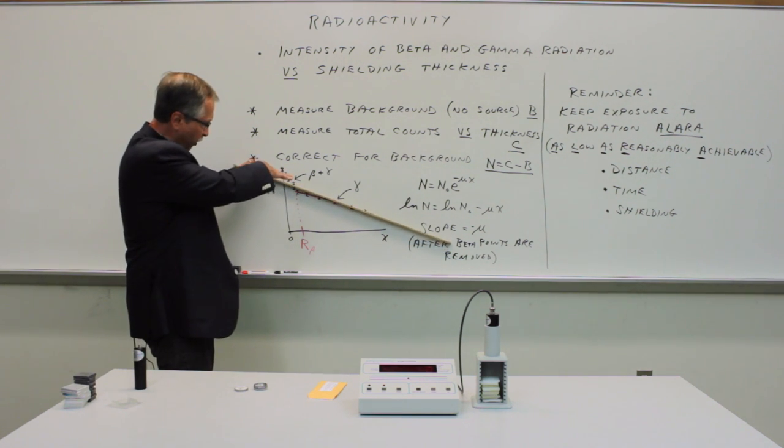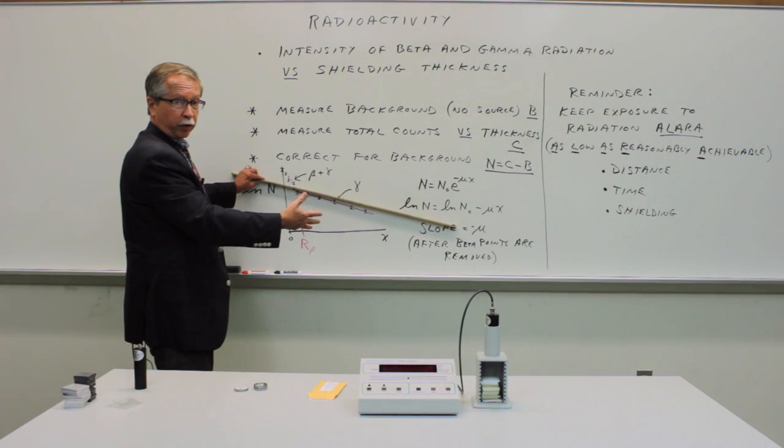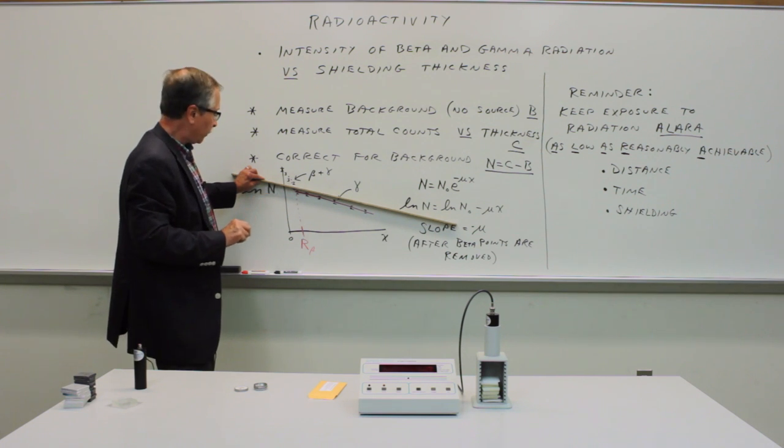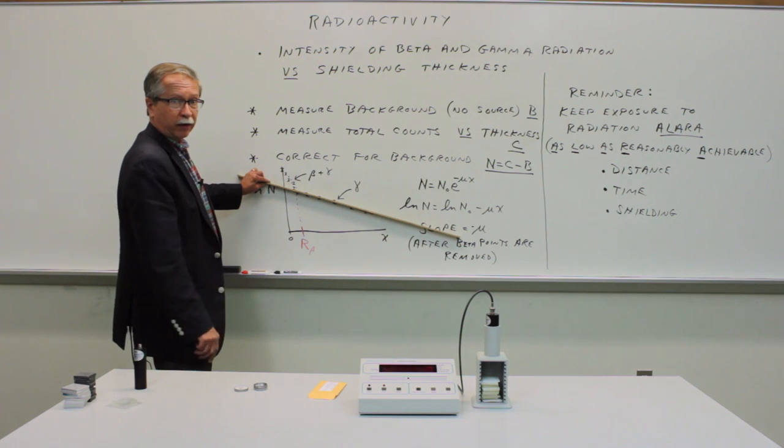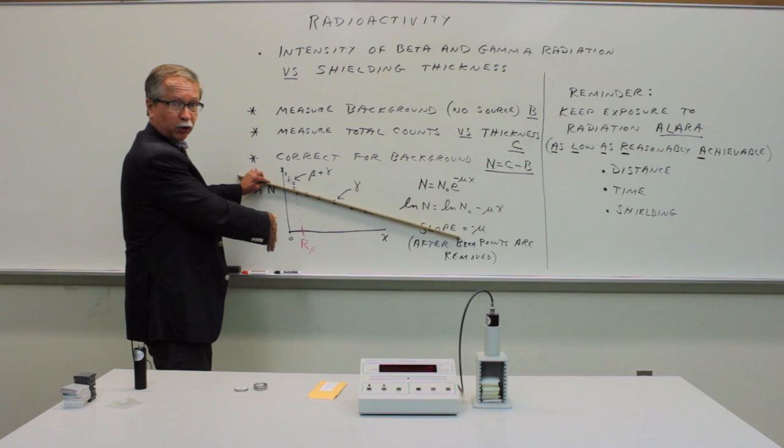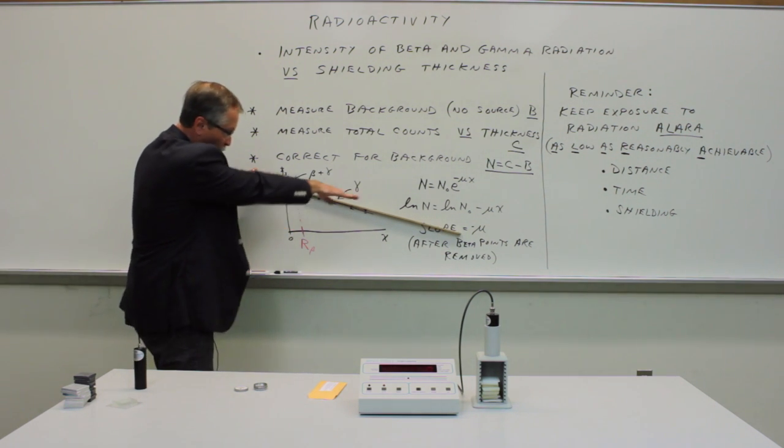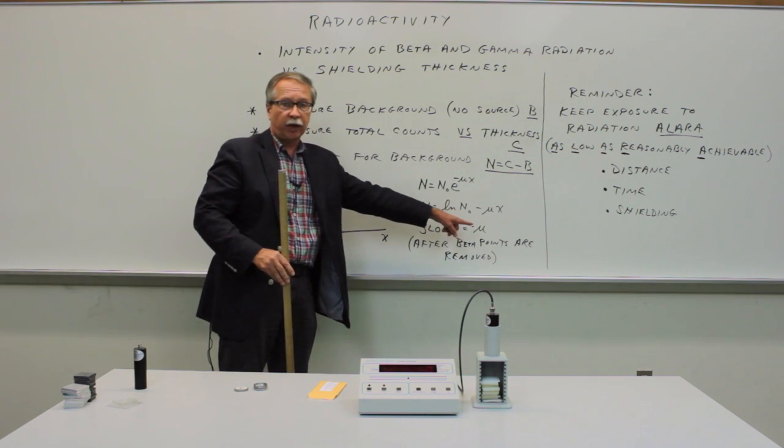That will gradually change the slope of this line and it will improve the value of chi-squared. You want to get a reduced chi-squared that's as close to one as possible. So when you are satisfied that you've optimized the value of chi-squared, the last data point that you chopped out of the set is the range for the beta particles and the slope of the remaining set of data is the scattering probability for the gamma rays.